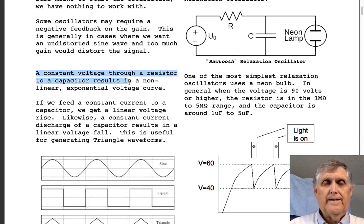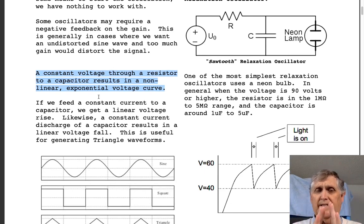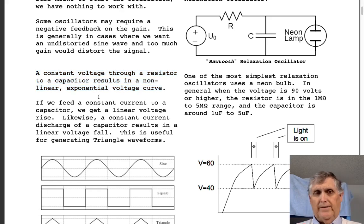Now, another issue is to remember a constant voltage through a resistor to a capacitor results in a non-linear exponential voltage curve. If we feed a constant current to a capacitor, you will get a linear voltage rise. And a constant current discharge would give us a linear voltage fall.